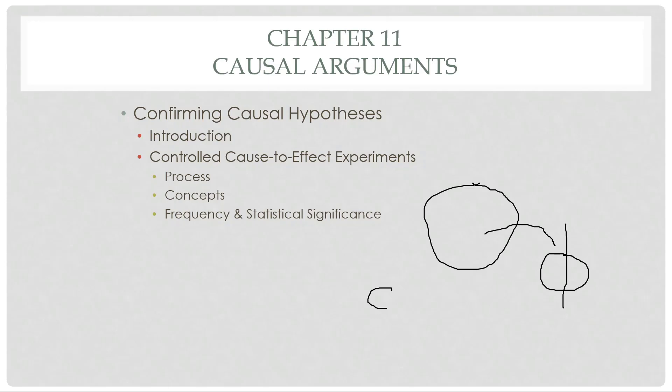One group is the control group, which is ideally like your other group, called the experimental group. The difference is that the control group is not exposed to the cause that you want to test — to see the effect of it. The experimental group is exposed to the cause, and then you observe the results and see if they're statistically significant.